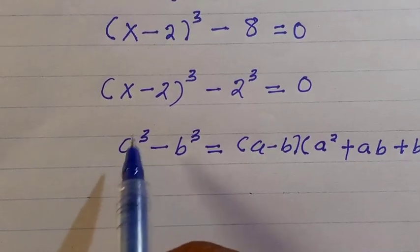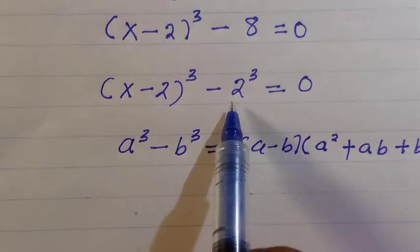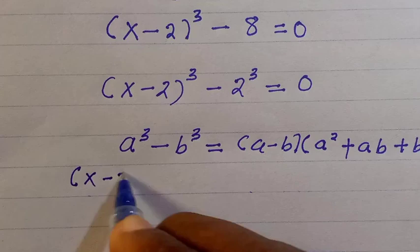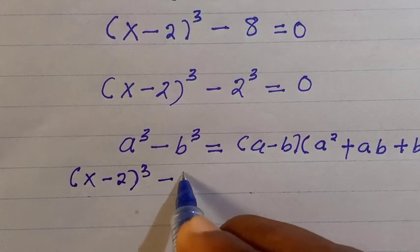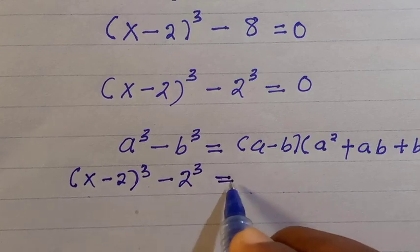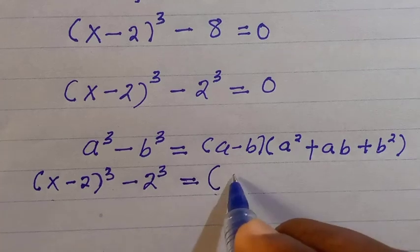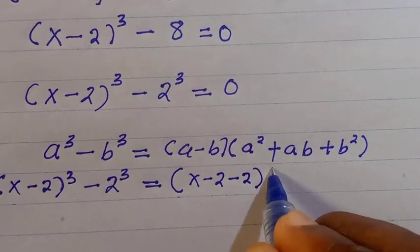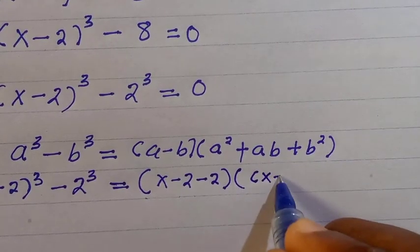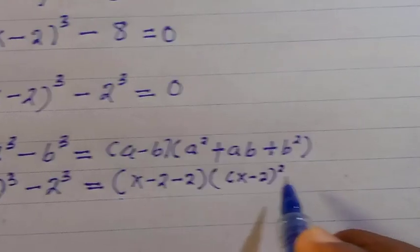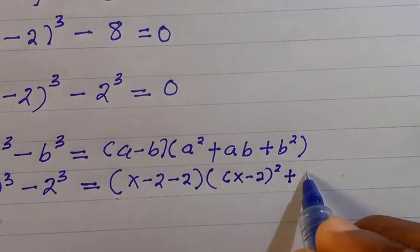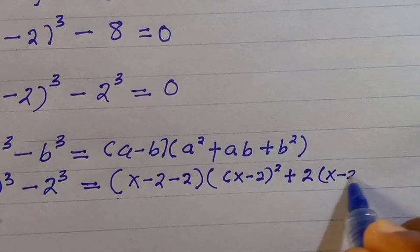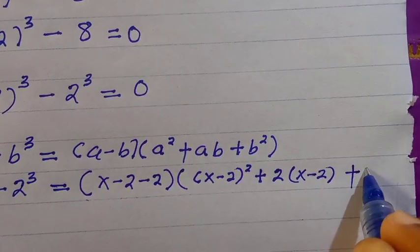So if a is x minus 2 and b is 2, we plug into the identity. Therefore we have x minus 2 to the power of 3 minus 2 to the power of 3 equals x minus 2 minus 2, times the bracket x minus 2 squared plus 2 times x minus 2 plus 2 squared.